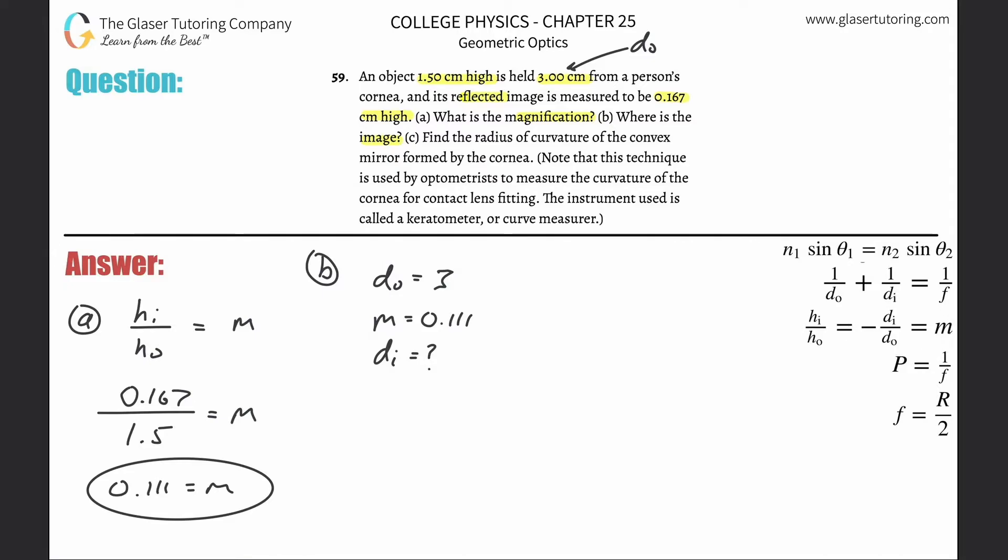We use the other part of that formula: negative image distance divided by object distance equals the magnification. To solve for d_i, just cross multiply d_o and bring the negative sign over. So d_i equals negative magnification, 0.111, multiplied by the object distance of three. The image distance is negative 0.334. You've got to remember the units - if this is in centimeters, then this answer is in centimeters.